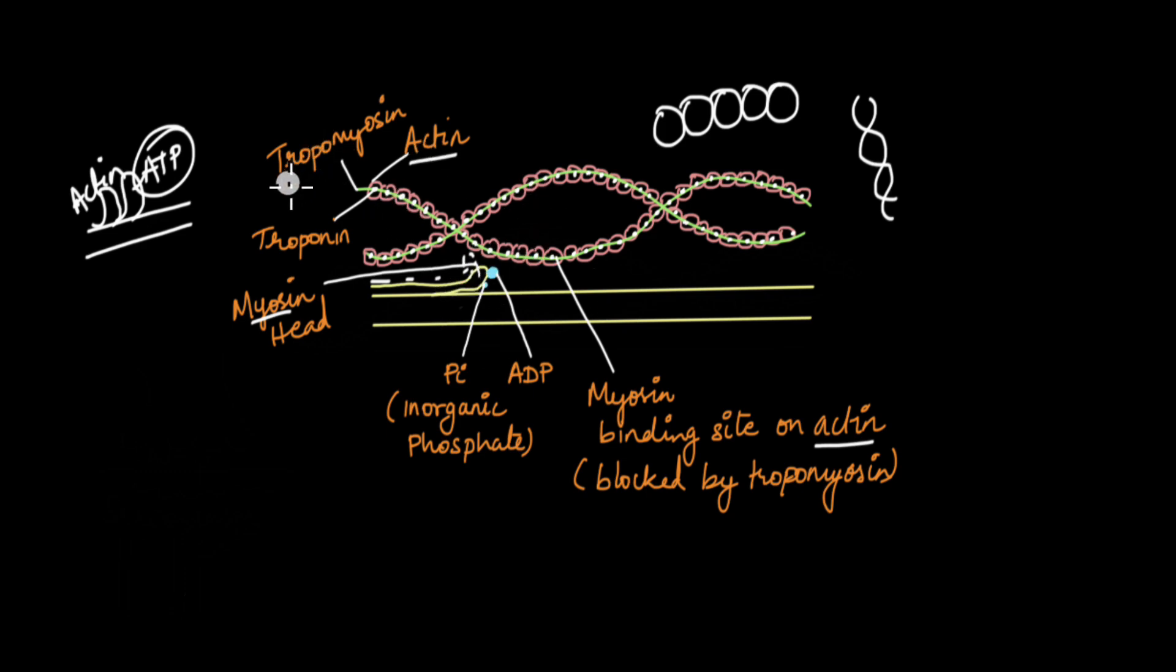That is because of this protein known as tropomyosin. Tropomyosin is sort of like a regulatory protein. It allows the myosin binding sites to be exposed only when the muscle needs to contract.